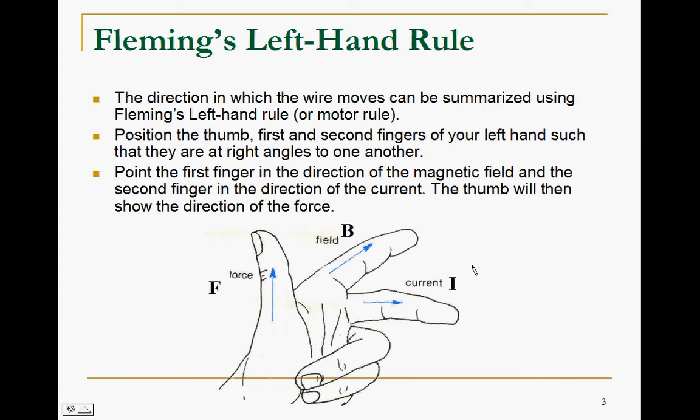Current, represented by the middle finger, is the letter I. So for easy recall, we can take a look at Fleming's Left Hand Rule as FBI.